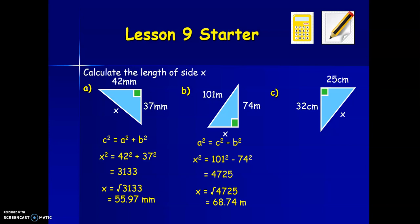And then the final example, X is opposite the right angle again, so this time it's the longest side. It's the add version of Pythagoras again. Putting in our values, X squared equals 32 squared plus 25 squared, which gives us 1,649. If we square root that answer, we get 40.61 centimeters for the length of X.